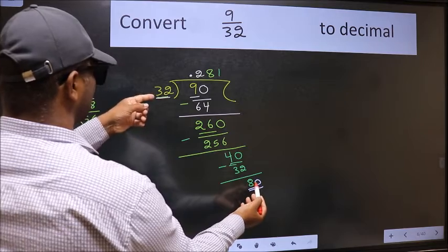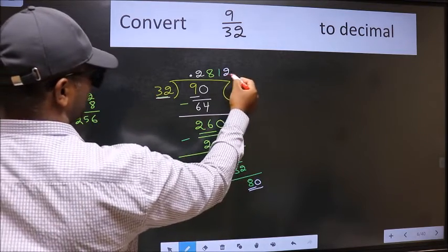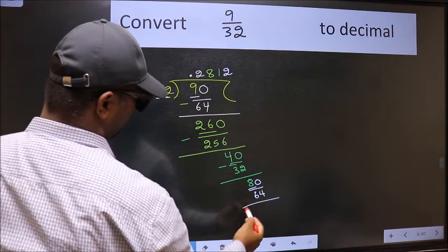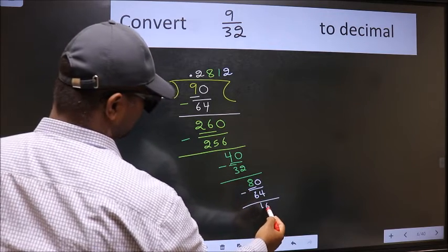A number close to 80 in the 32 table is 32 times 2, which is 64. Now we should subtract. We get 16.